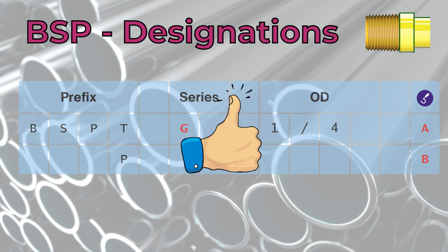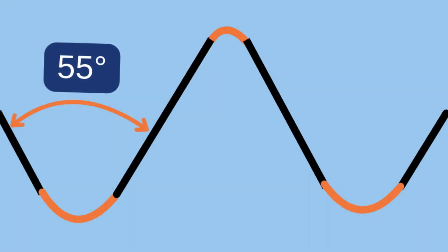Now that the description is clear, let's discuss each family and series further. All the families and series share the same basic profile with a 55 degree truncated and rounded triangle.